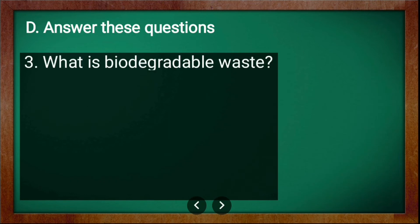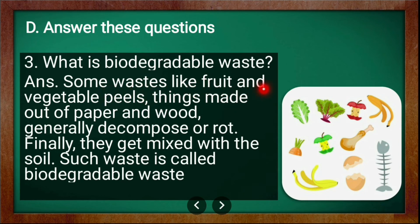Third question: what is biodegradable waste? Some wastes like fruit and vegetable peels and things made out of paper and wood generally decompose or rot. Finally they get mixed with the soil. Such waste is called biodegradable waste.